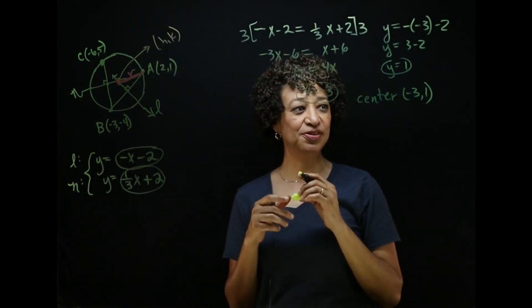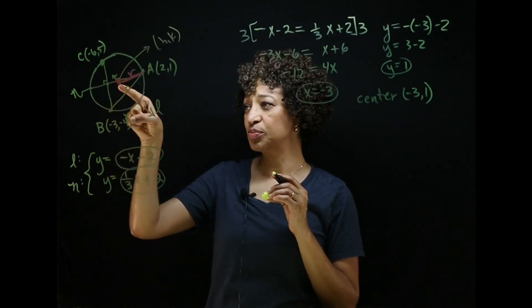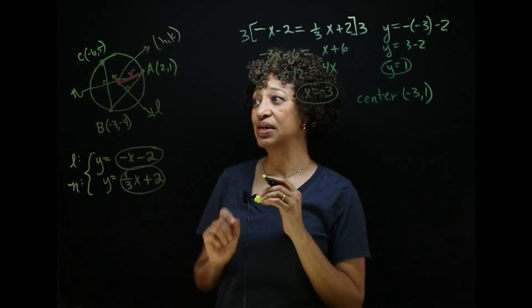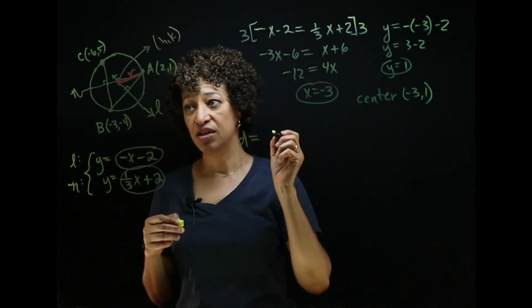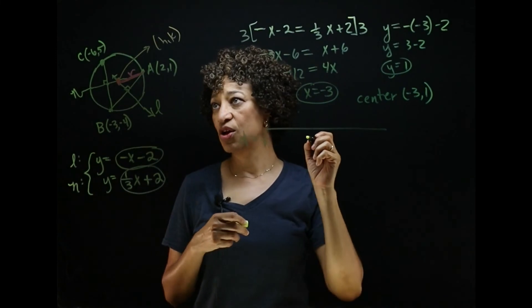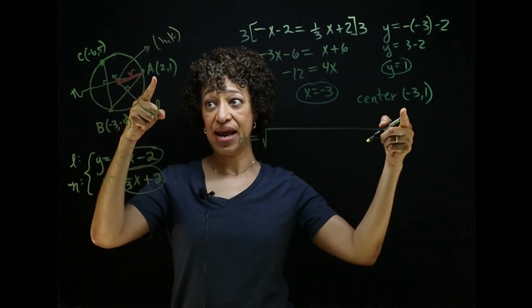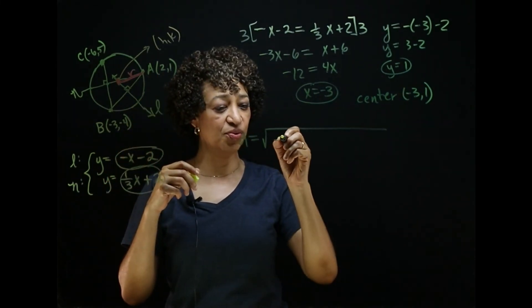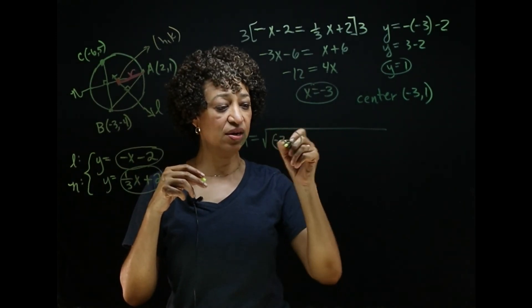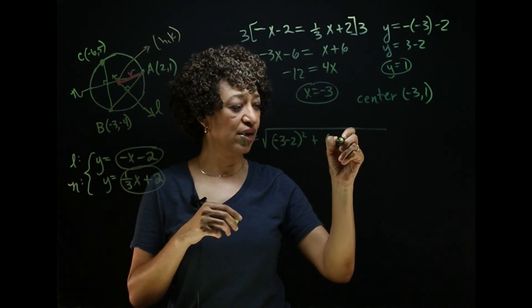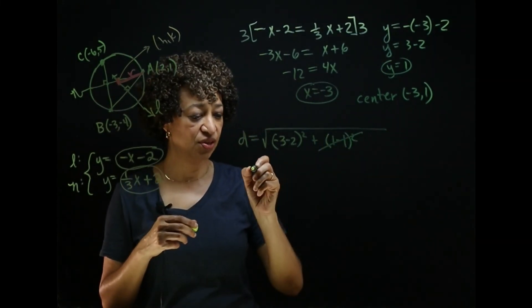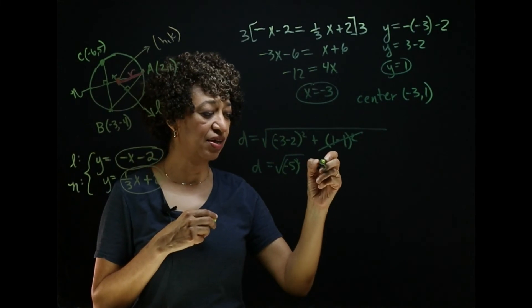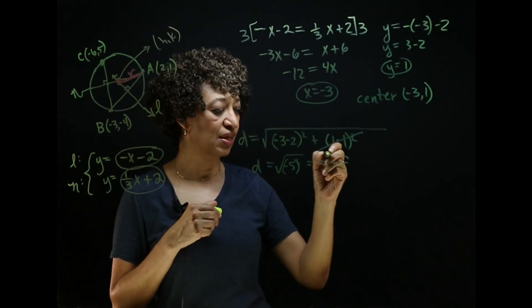Now I need to find the radius, which is the distance between the center and any of the three points — the easier one is point A. Using the distance formula: the square root of (negative three minus two) squared plus (one minus one) squared. The second term cancels, leaving the square root of negative five squared, which is just five. So the radius is five.